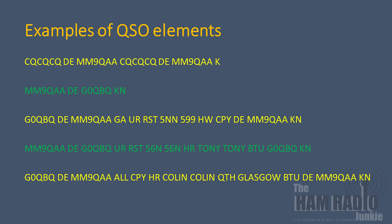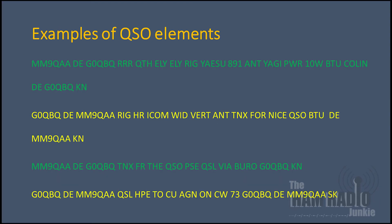The station in yellow responds with 'all copy', gives his name as Colin, his QTH as Glasgow, then returns back with his call sign followed by K-N. The green station comes back with 'Roger Roger Roger', states the QTH is Ely, the rig is a Yaesu 891, the antenna is a Yagi, the power is 10 watts, and returns it back to Colin.